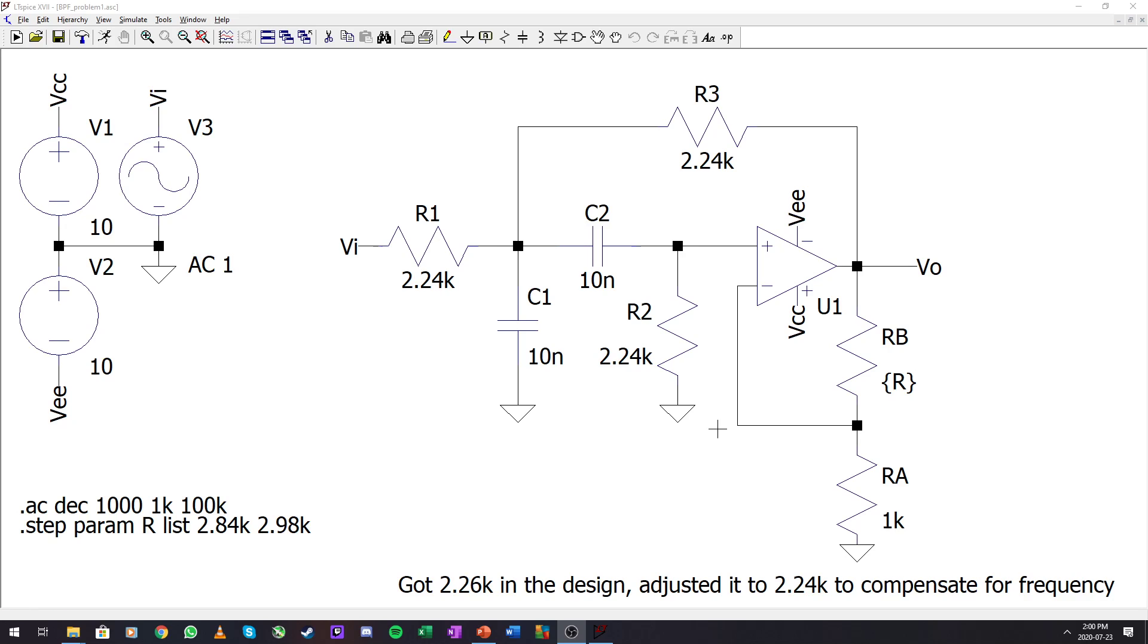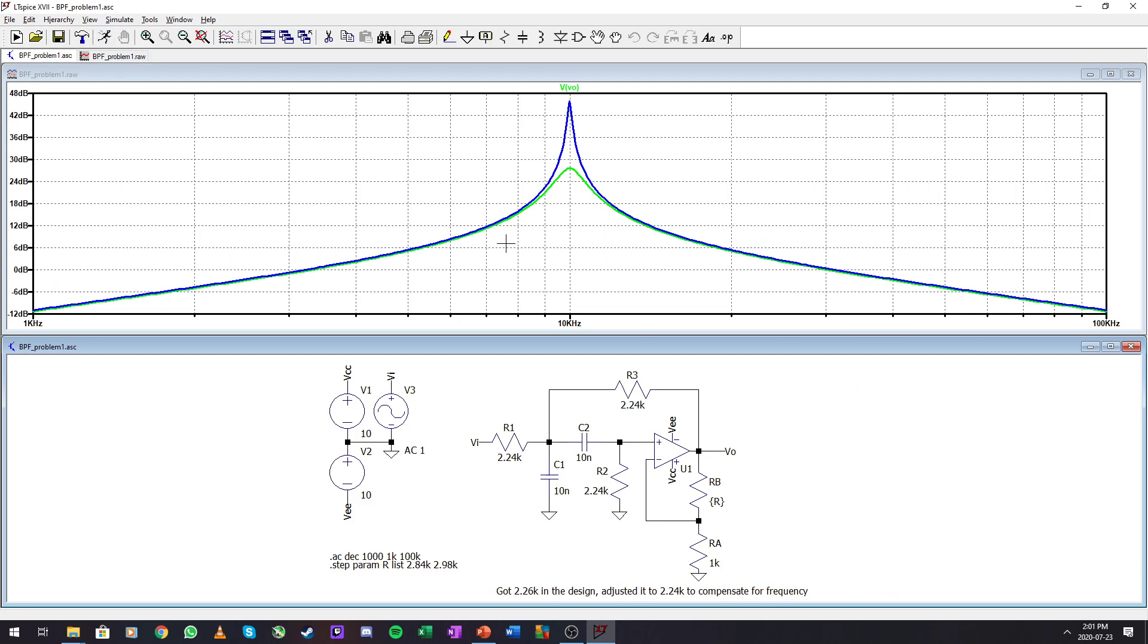So I set this up as a filter, and I tweaked these resistor values to 2.24 already, because the center frequency was a bit off, and that is due to the choice of components. You're always going to play around in the simulation to get this to work perfectly, and then RB I made a parameter so that we can see both at the same time.